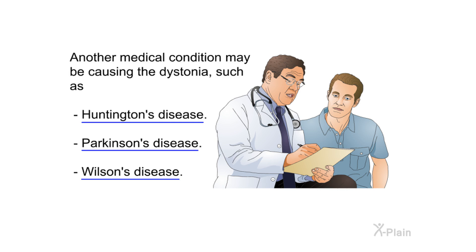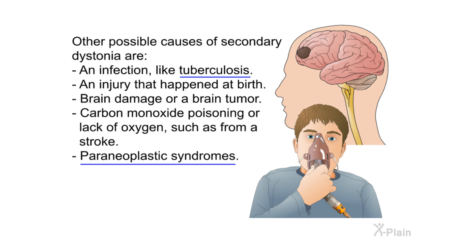Another medical condition may be causing the dystonia, such as Huntington's disease, Parkinson's disease, or Wilson's disease. Other possible causes of secondary dystonia include an infection like tuberculosis, an injury at birth, brain damage or a brain tumor, carbon monoxide poisoning, or lack of oxygen such as from a stroke.